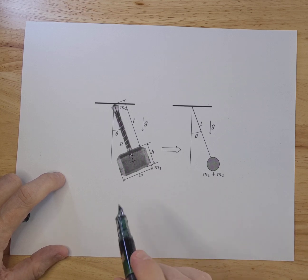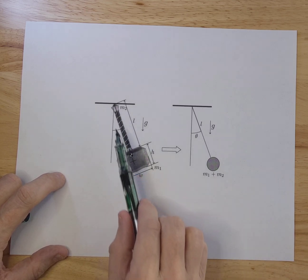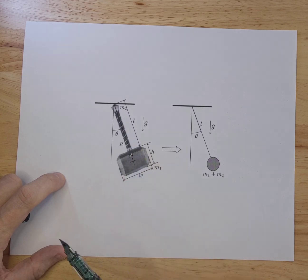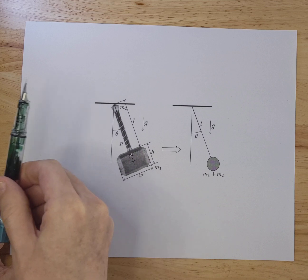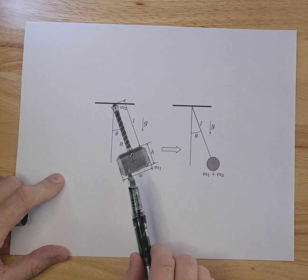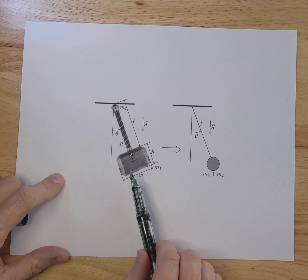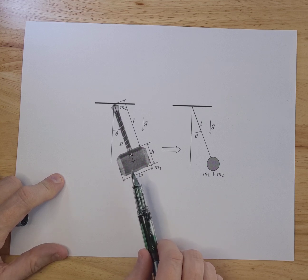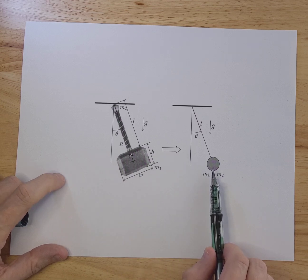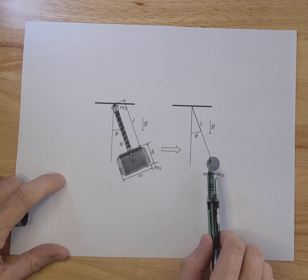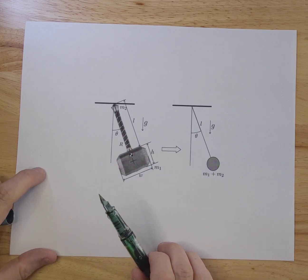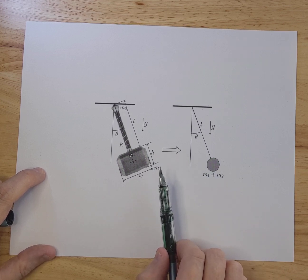So what I did is I took Thor's hammer, as you can see in this picture, and I'm going to let Thor's hammer swing back and forth. I'm going to see what the equations of motion are based on the Lagrangians. I'm also going to look at simplifying this, simulate both, and see what the differences are and what the effects are of all these estimations and approximations.